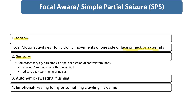Or sometimes having sensory phenomena: the child will have somatosensory symptoms such as paraesthesia or pain sensation of the contralateral part of the body. In visual phenomena, the child will see scotoma or flashes of light. In auditory phenomena, the child will hear ringing or some noise. In autonomic phenomena, there will be abnormal sweating or flushing. In emotional phenomena, the child will have an abnormal or funny feeling, such as the sensation of an insect crawling inside the body. This is in brief about focal aware seizures or simple partial seizures.